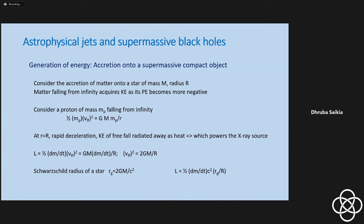This is what is believed to power the X-ray sources — for example, when a neutron star is accreting matter from a binary companion via Roche lobe overflow. Matter falling in through its Roche lobe is falling onto a very compact object, and gravitational potential energy is being converted to heat. That is believed to power the X-ray sources in our galaxy.